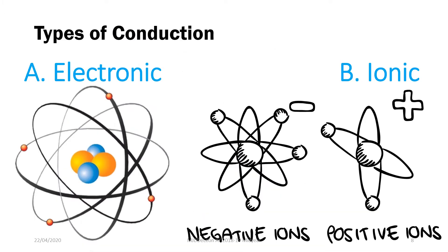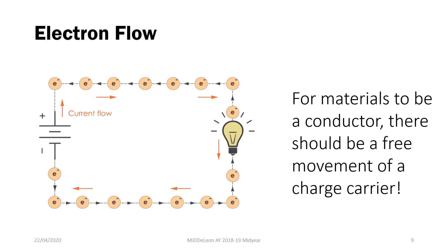There are two different types of conduction: electronic and ionic conduction. For electronic conduction, this happens through the movement of free electrons in our material. Meanwhile, for ionic conduction, this happens through the movement of either positive or negative ions in our system. For materials to be a conductor, there should be a free movement of a charge carrier. In most materials, that charge carrier happens to be electrons.